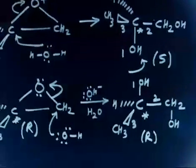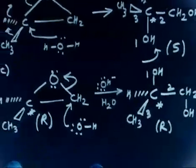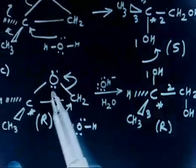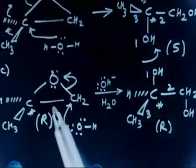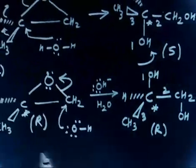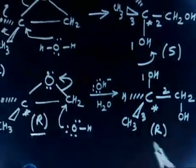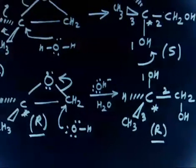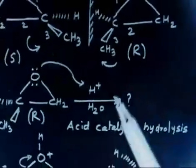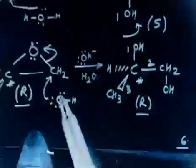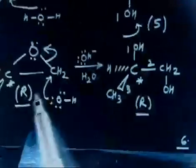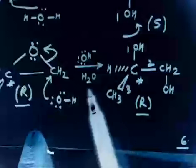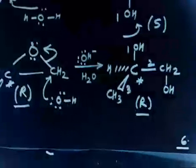So in case of acid-catalyzed hydrolysis of the epoxide, the R-isomer gives S-glycol — that is inversion. In case of base-catalyzed hydrolysis, the R-isomer gives R-glycol — that is retention. This is an important point.